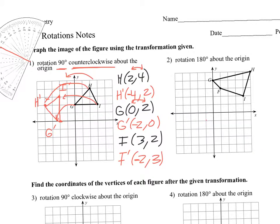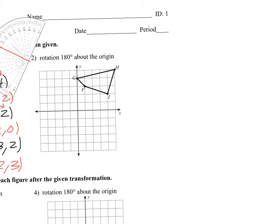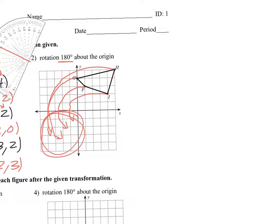So what about a rotation 180 degrees? Rotation 180 degrees — it doesn't matter the direction, because if you go 180 to the left or 180 to the right, you end up at the same place. So 90 degrees is one quadrant. 180 is going to be in this quadrant — two quadrants over. In that quadrant, X's are negative and Y's are negative.